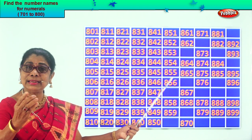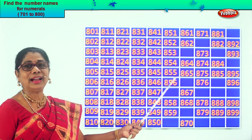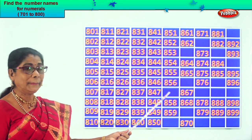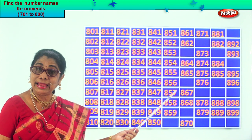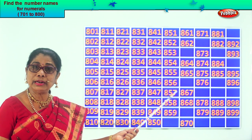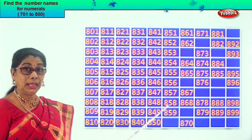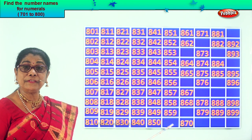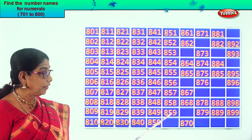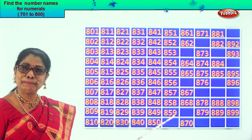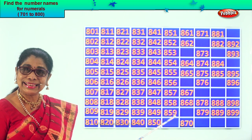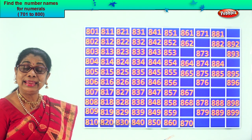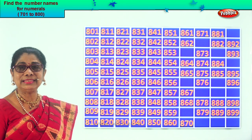After 6 comes 7 — after 56 comes 57. So the missing number here is 857, then 858, 859. After 59 comes 60. So the missing number here is 860.